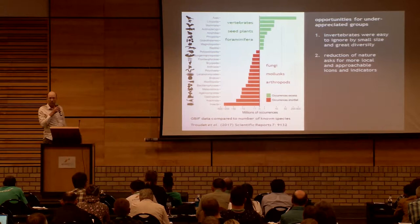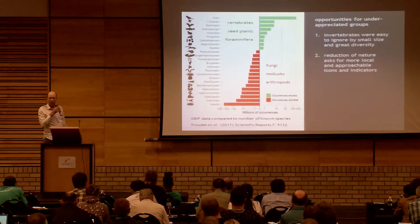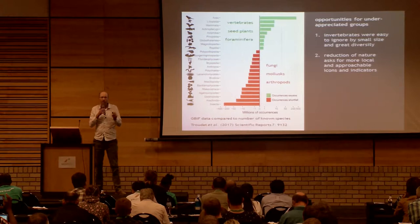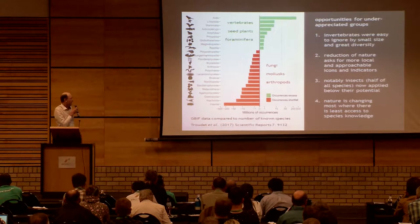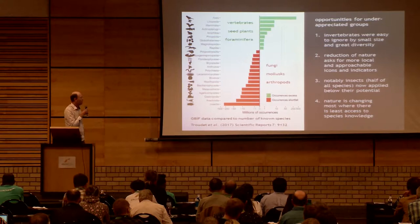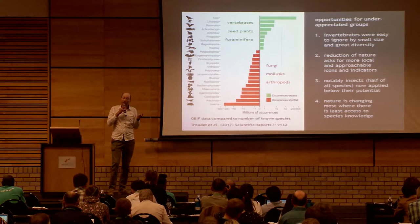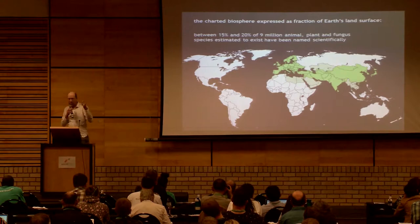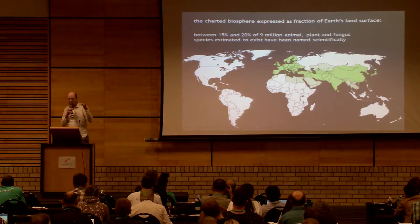This is really going to make a big difference. We're going to break through a long-standing lull where vertebrates and seed plants get a lot of attention, while other groups feel very ignored. It was always easy to ignore invertebrates — they're small, there are too many of them — but now that could all change. That's important because we're losing our conservation icons. Just imagine a world without pandas — how are we going to motivate people to conserve? It's going to become more important to have local, recognizable icons, and especially insects — half of all eukaryote species by some estimates — are not yet applied to their full potential.